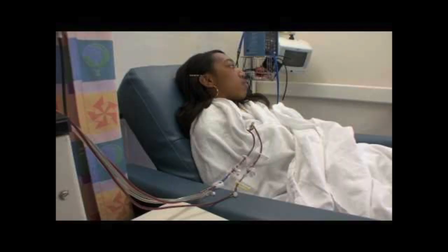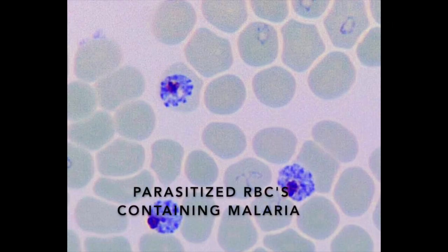While sickle cells negatively impact the individual, the spleen is effective in filtering and removing parasitic sickle cells, such as cells containing malaria.